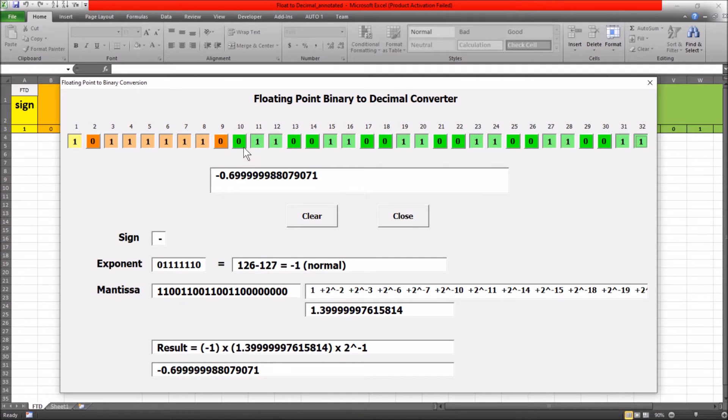You've got the minus and you've got the exponent here which is 126 minus the bias which gives us -1. We've got our mantissa which starts from number 1.0, which is going to be 1 plus 2 to the -2, 2 to the -3. There's no -4 or -5 and it goes 2 to the -6 and 2 to the -7. That gives us number 1.3999. When we multiply these together, -1 times 1.3999 times 2 to the power of our exponent here which is -1, we get -0.7.